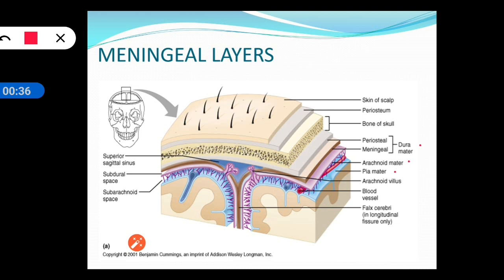The dura mater has two layers: the periosteal layer and the meningeal layer. The periosteal layer is towards the skull, whereas the meningeal layer is towards the brain.